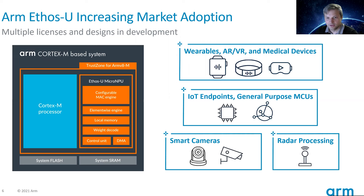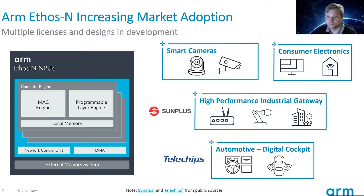Our bigger NPUs, Ethos-N, target high-throughput, more computationally powerful systems such as mobile phones, more sophisticated smart cameras, other consumer devices, industrial gateways, and automotive infotainment systems.